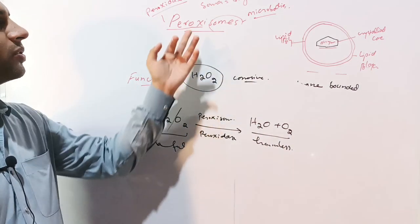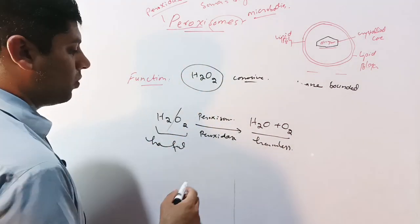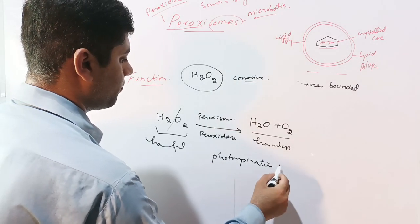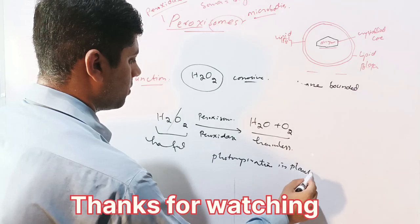This is the primary function of peroxisomes in animal cells. In plant cells, they are involved in photorespiration.